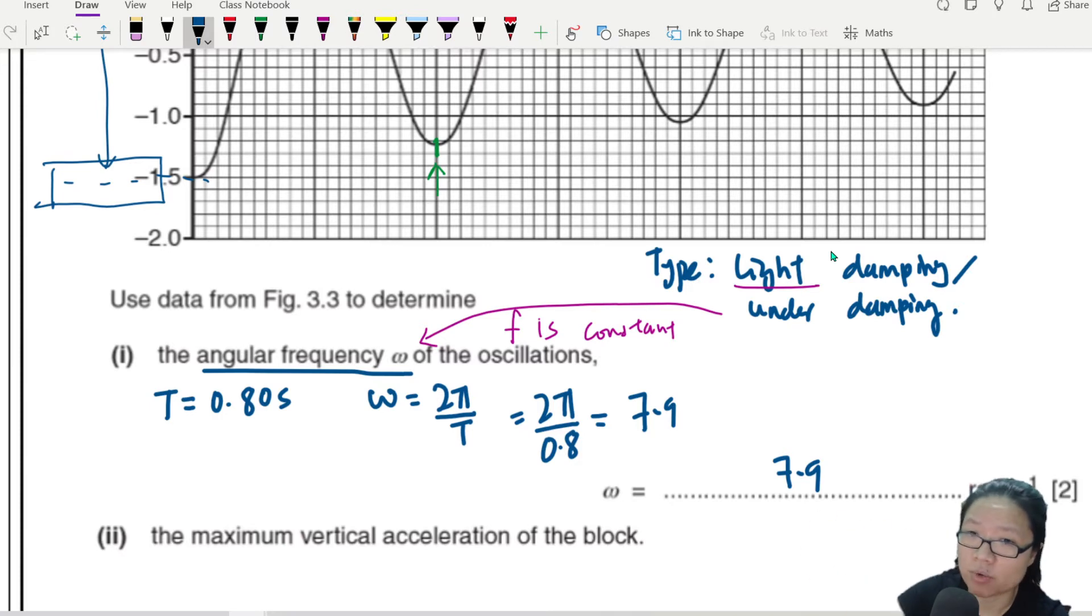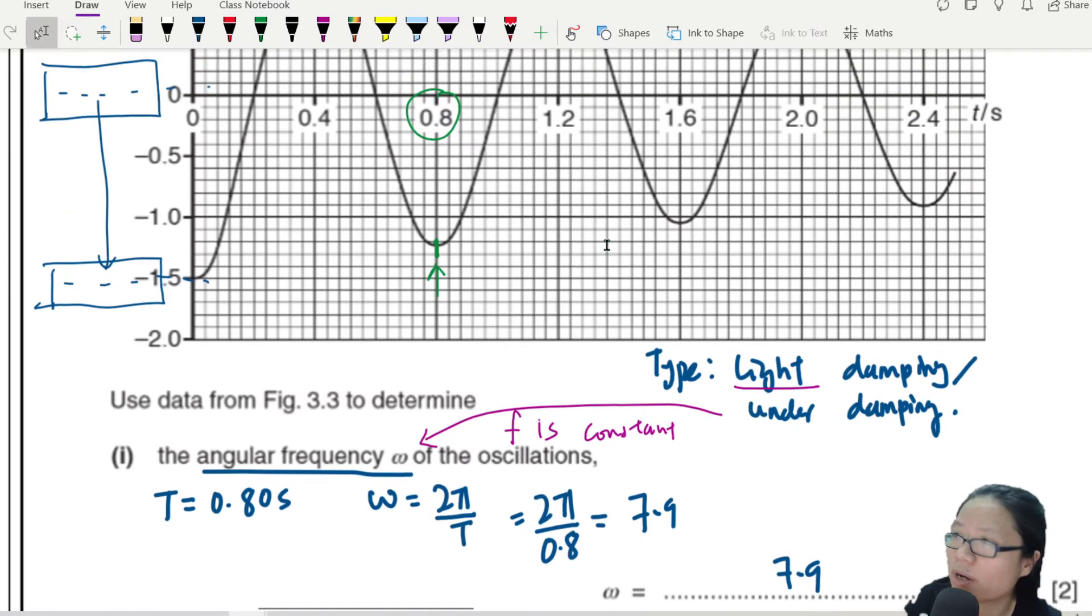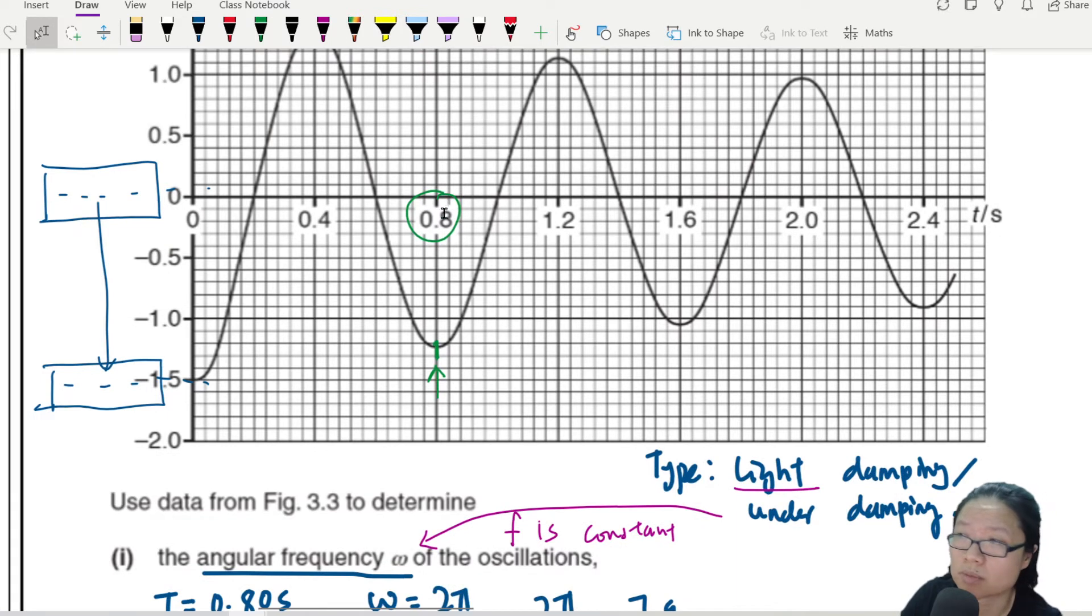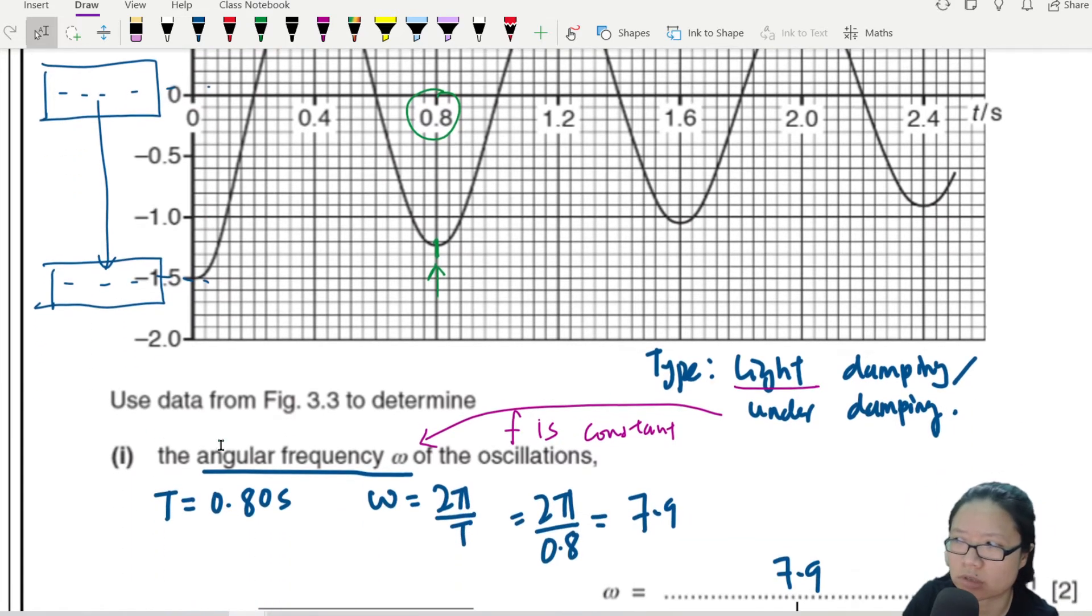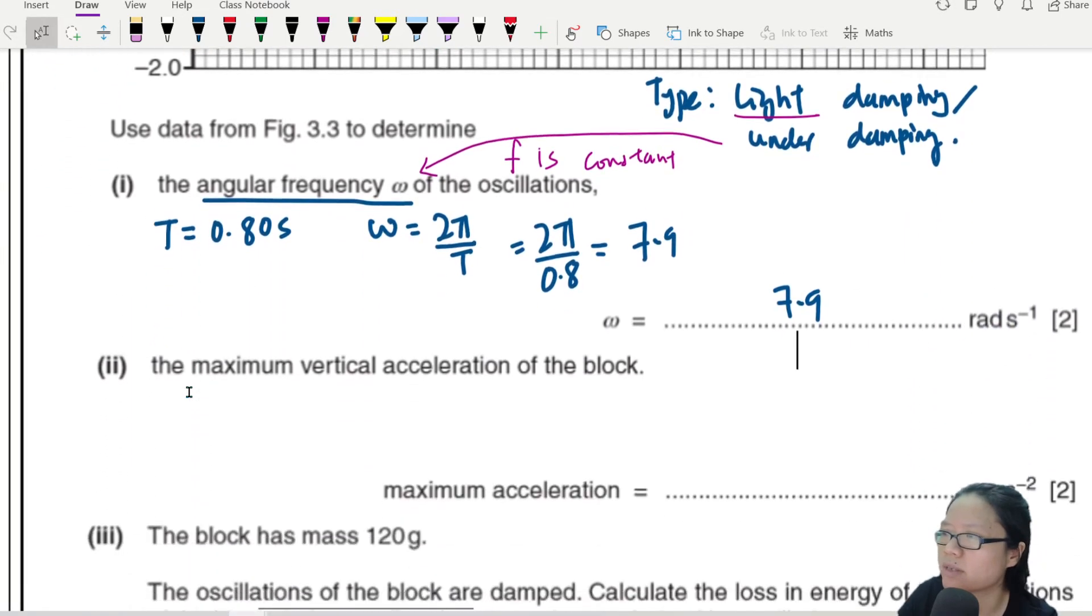So 2π over 0.8, and that would give you 7.9 radian per second. Write your answer in 2 or 3 significant figures. Never ever write answer in π. We are not doing maths, we're doing physics. I have to check your significant figures. Why do I write 0.80? Because I can read to 2 decimal points from the graph. The smallest possible value is 0.02. So I could read another decimal point.